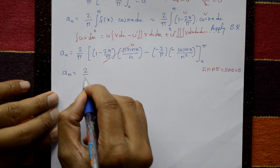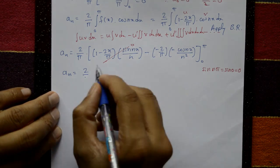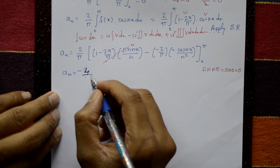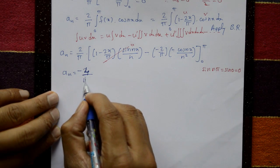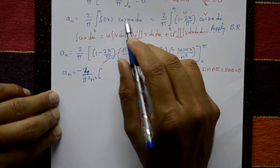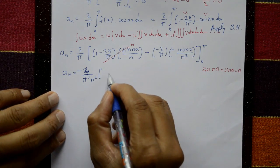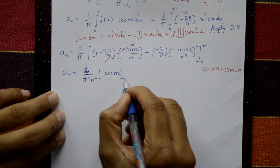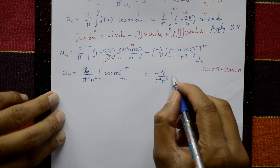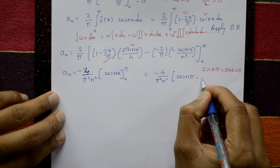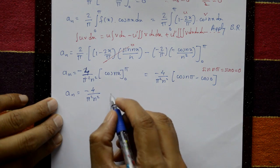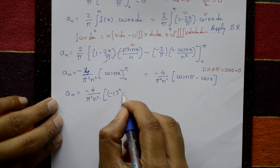Taking the remaining term: minus minus gives a positive, and combining 2/π · 2/5 · 1/n² gives 4/(πn²) · [cos(nx)] from 0 to π outside the integral. Evaluating: aₙ = −4/(π²n²) · [cos(nπ) − cos(0)] = −4/(π²n²) · [(−1)ⁿ − 1].